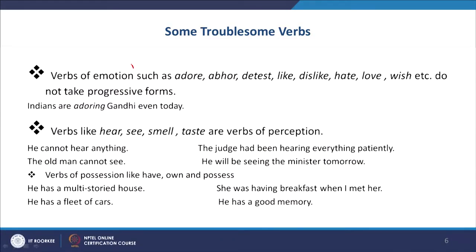After relational verbs, let us come to other troublesome verbs. The second category is verbs of emotion — words like 'adore,' 'avoid,' 'detest,' 'like,' 'dislike,' 'hate,' 'love.' One should never use them in their progressive forms. You cannot say 'I am disliking you,' 'I am hating you,' 'I am loving you.' These verbs do not allow progressive forms. For example, instead of 'Indians are adoring Gandhi even today,' we must say 'Indians adore Gandhi even today.'